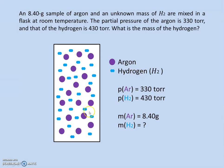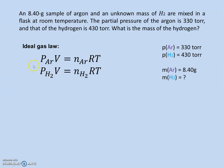mixed in a flask at room temperature. We know that the partial pressure of argon is 330 torr and that of hydrogen is 430 torr. Now we want to calculate the mass of hydrogen. The ideal